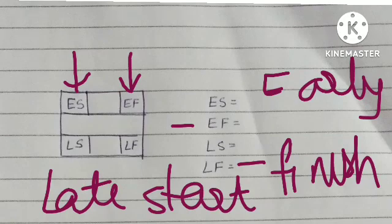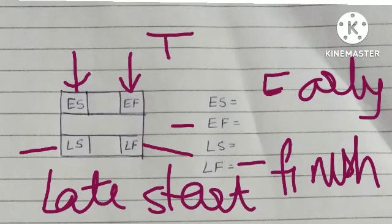ES means early start, EF means early finish, LS means late start, and LF means late finish. Now there is one term known as TF, which means total float. These are the basic terms used in network diagrams.